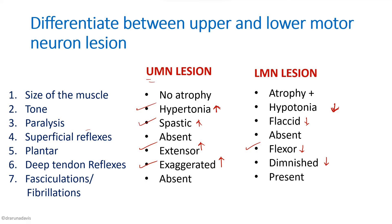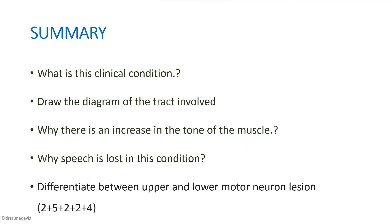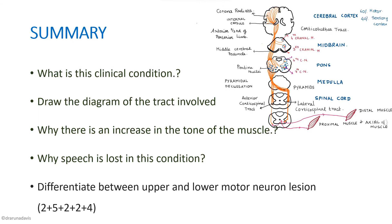We have now completed all the questions. To summarize, we discussed the clinical condition, drew the diagram of the corticospinal tract, explained why there is an increase in muscle tone, why speech is lost, and the differences between upper and lower motor neuron lesion. I hope the concept is clear. Thank you.